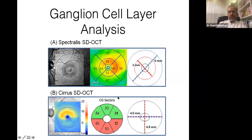A nice addition to OCT in recent years is the ability to look at the ganglion cell layer — the ganglion cells that form the origin of the axons of the optic nerve. We segment the macula and fovea because the macula is rich in ganglion cells. Areas shown in red indicate increased density; absent red areas indicate loss of ganglion cells. On the Cirrus device, green represents a normal ganglion cell layer, and loss is shown below that.